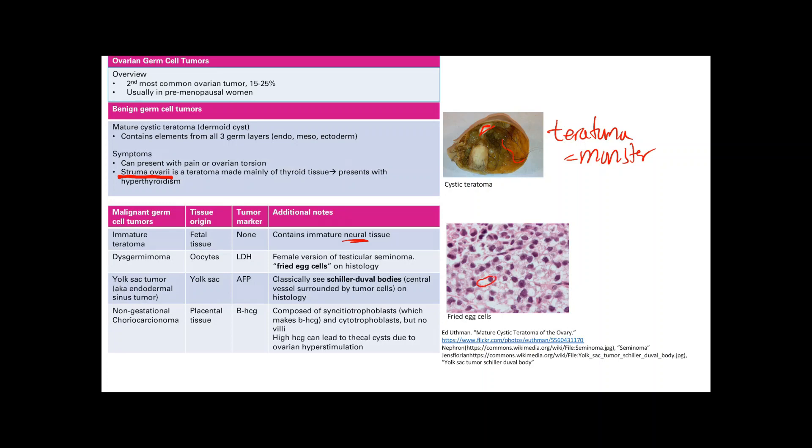On histology you're going to see fried egg cells. You see this egg: there's the egg white and then there's the egg yolk. That's a fried egg cell that's associated with dysgerminoma.